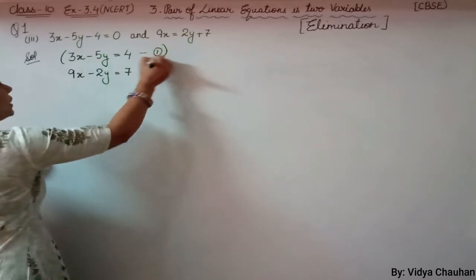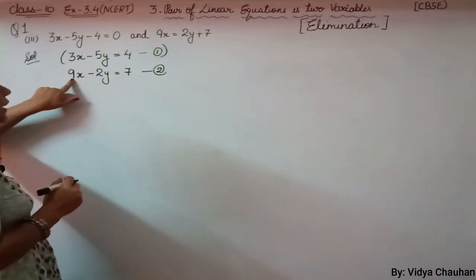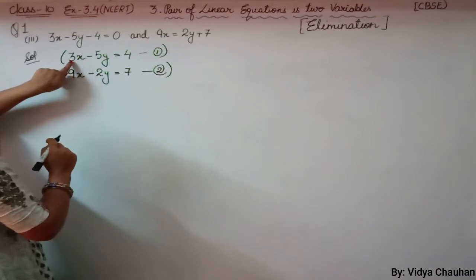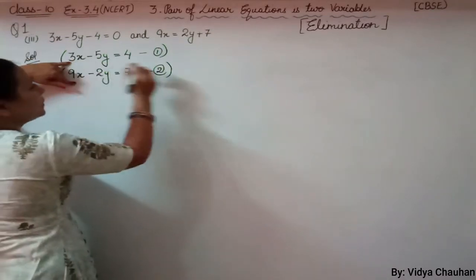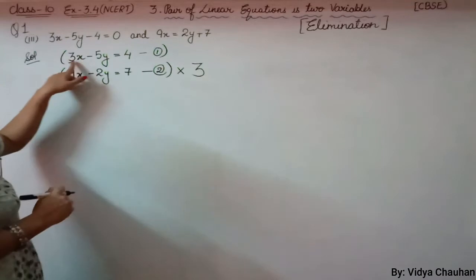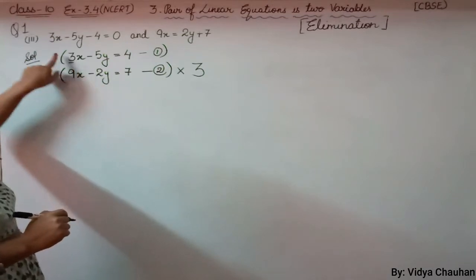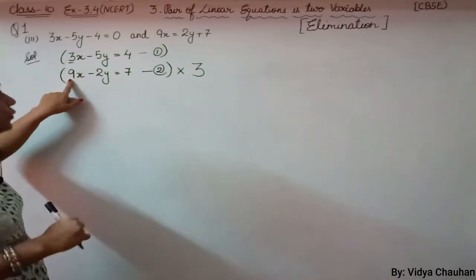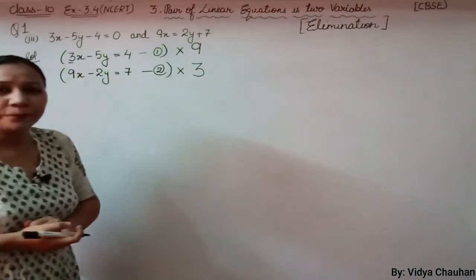In equation 1, the coefficient of x is 3, and in equation 2, the coefficient of x is 9. The method is: we multiply equation 2 by the coefficient of x from equation 1, which is 3, and we multiply equation 1 by the coefficient of x from equation 2, which is 9. So we multiply equation 1 by 9 and equation 2 by 3.